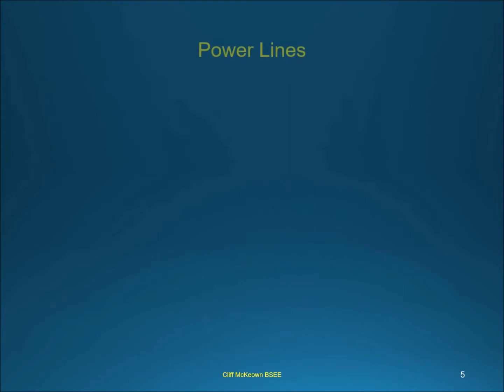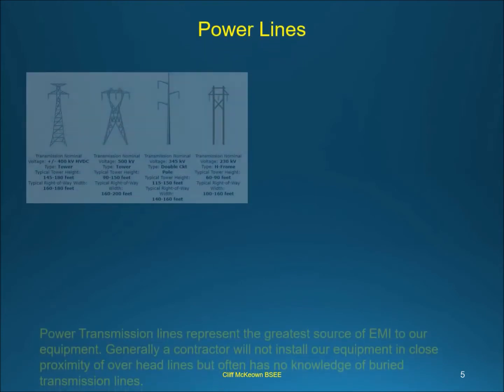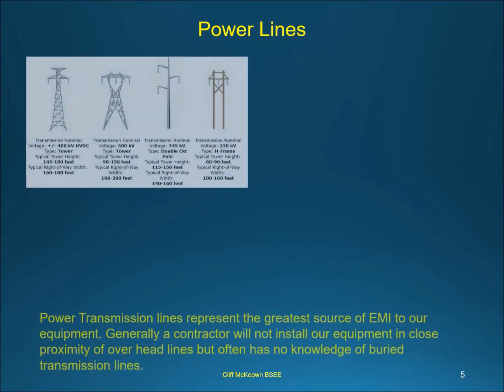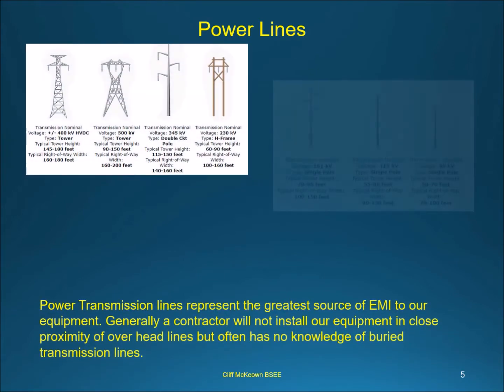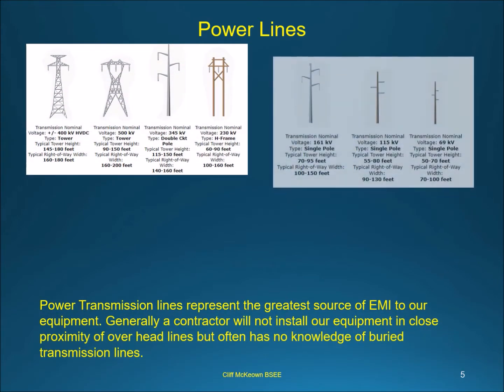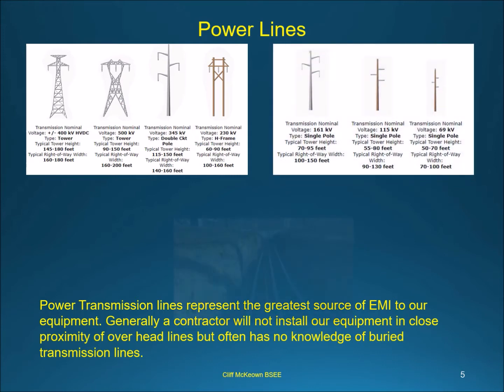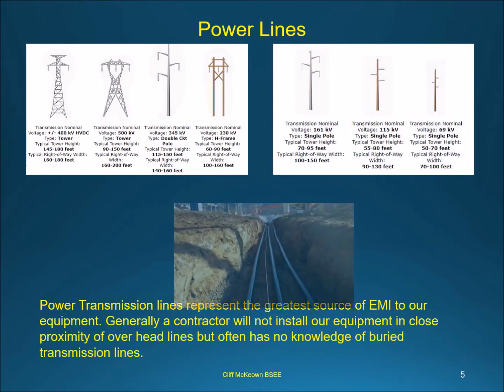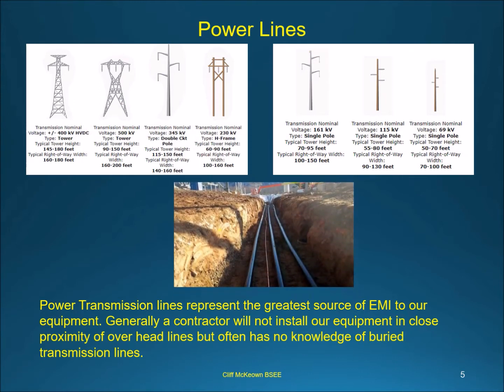Power transmission lines represent the greatest source of EMI to our equipment. Generally a contractor will not install our equipment in close proximity to overhead lines but often has no knowledge of buried transmission lines. Careful consideration should be taken when installing electromagnetic flow meters in close proximity to power lines. Maximizing the distance between the power lines and the meter is the best method of preventing EMI.